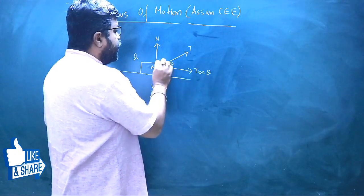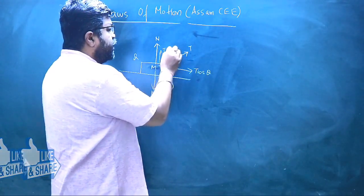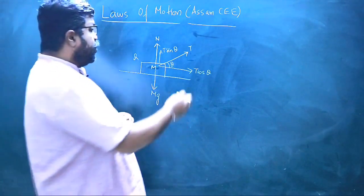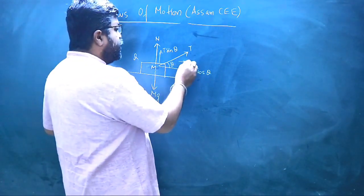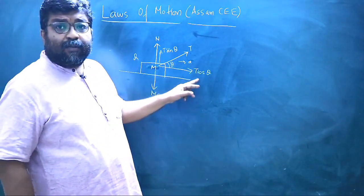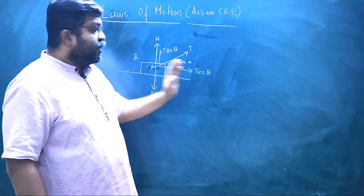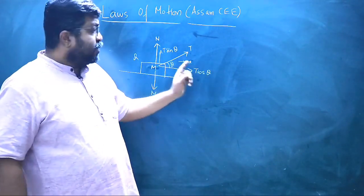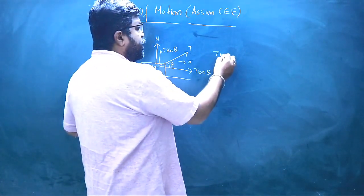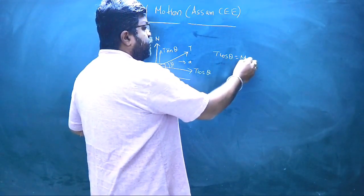The horizontal component of the pull is T cosθ, and the vertical component is T sinθ. Since the block moves with acceleration A in the horizontal direction, applying Newton's second law: T cosθ = MA.